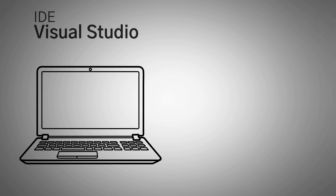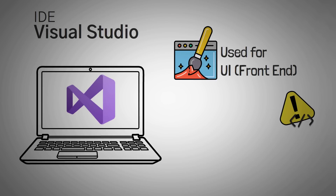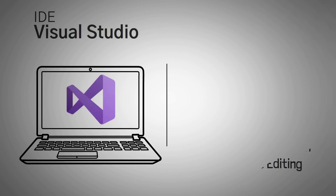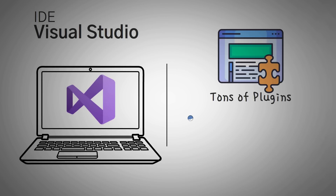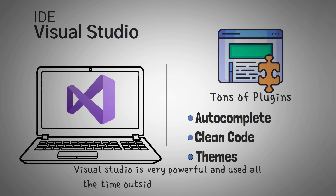Another IDE is Visual Studio. Visual Studio is an IDE I specifically use for the creation of the front-end, or the user interface, of decentralized applications. It also tells you about errors and warnings, and lets you easily move between different files that you're editing. Visual Studio has a ton of plugins you can add, from autocomplete to a plugin that makes your code look really clean, and you can create basically any theme you can imagine. Visual Studio is very powerful and is used all the time outside of Web3 development.